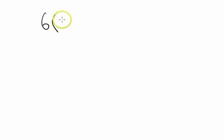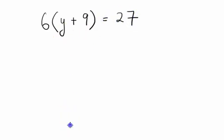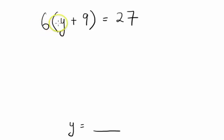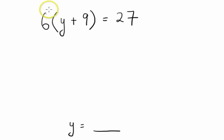Another example: say we have 6 times bracket y plus 9 equals to 27. Again, to solve this means y will equal to something. To solve this, we first have to remove the brackets, which means we multiply 6 by the terms inside.